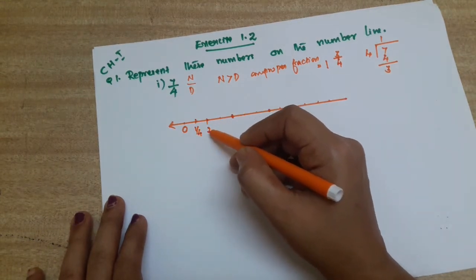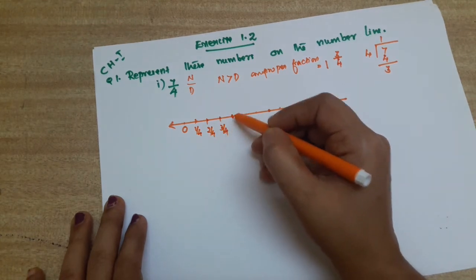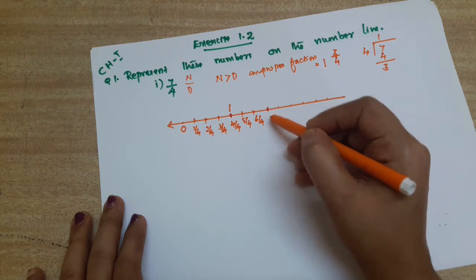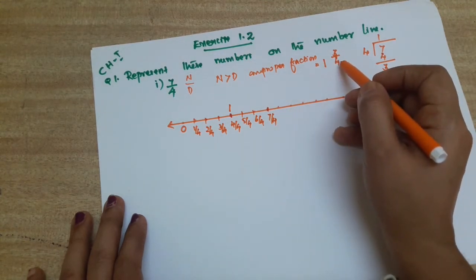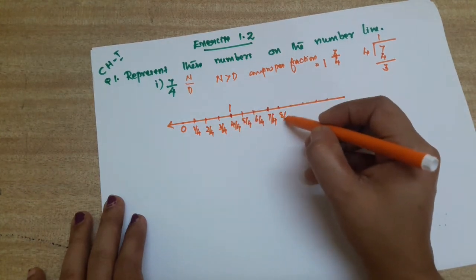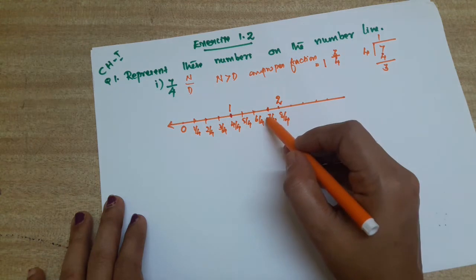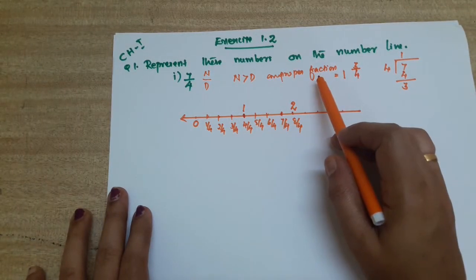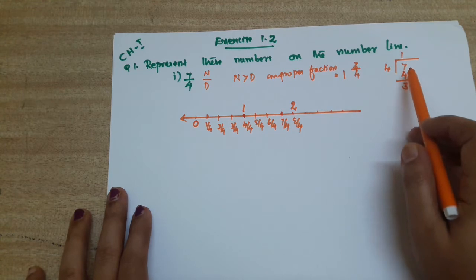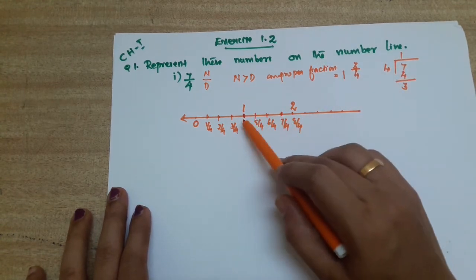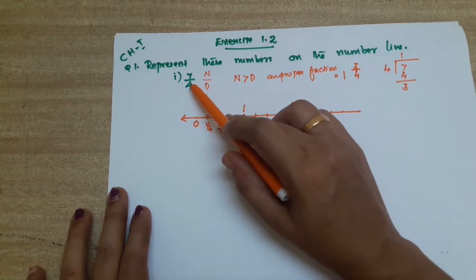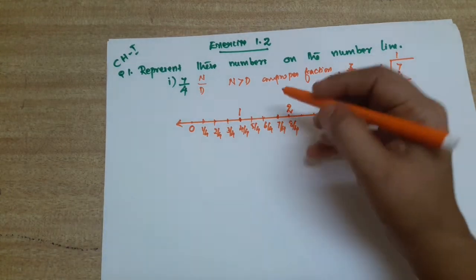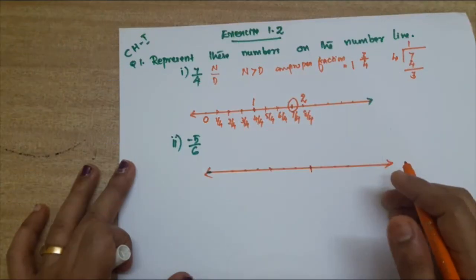So here it is: 0, then 1 by 4, 2 by 4, 3 by 4, 4 by 4 — that means 1. Then 5 by 4, 6 by 4, and this is our 7 by 4. Then 8 by 4 means 2. So between 1 and 2 this number lies. We write: 4 by 4 is 1, then 5 by 4, 6 by 4, 7 by 4 — this is our point.